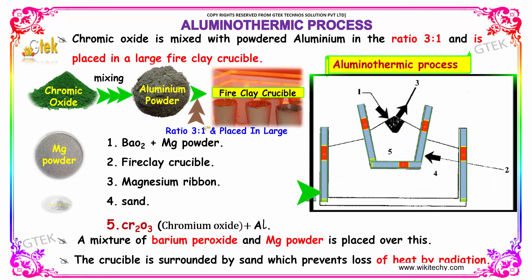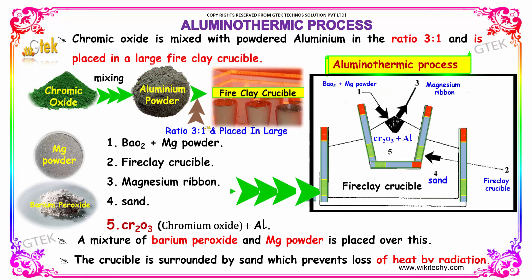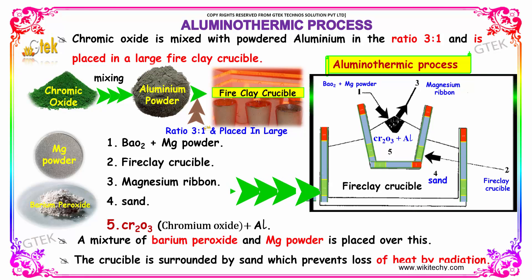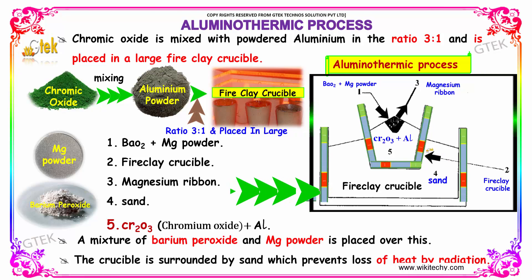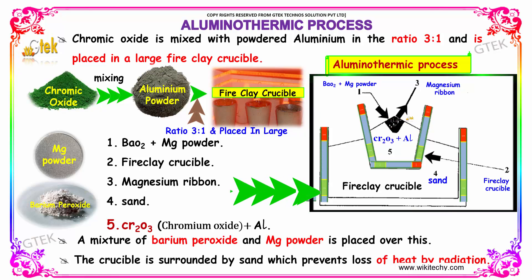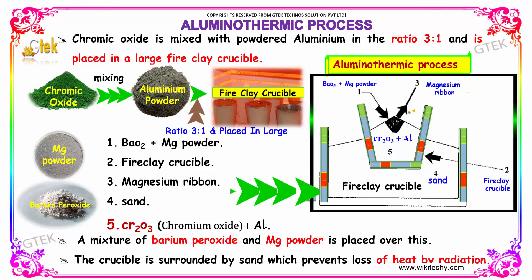The next process is the Aluminothermic process. The Aluminothermic process involves a fire clay crucible like this. Chromic Oxide is mixed with powdered Aluminum in the ratio of 3 to 1, and it is placed in a very large fire clay crucible.